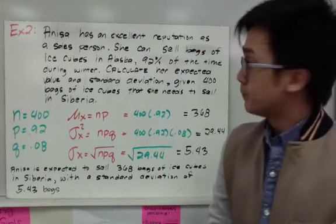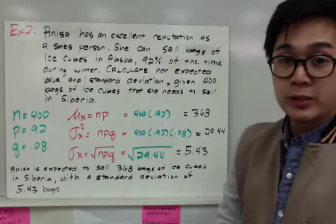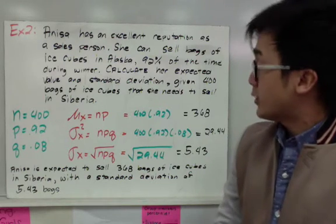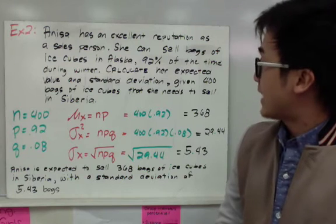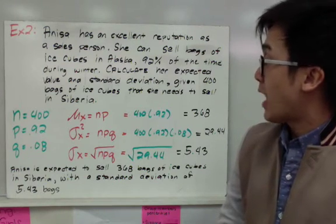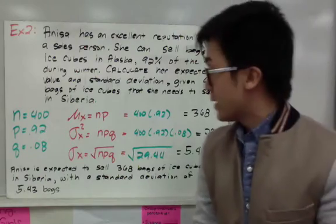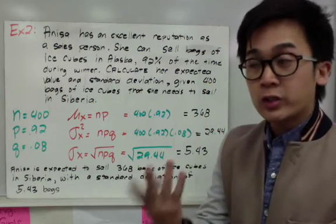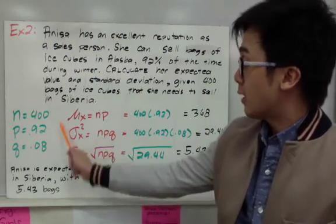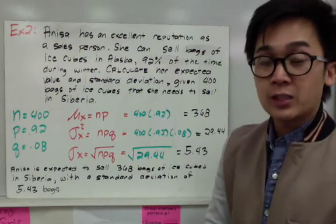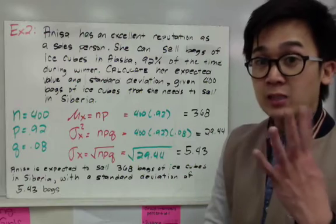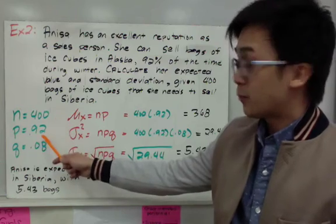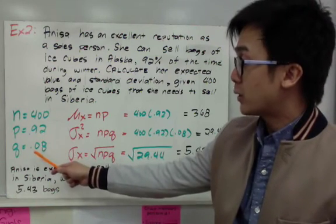Now for the second example, Anissa has an excellent reputation as a salesperson and she can sell bags of ice cubes in Alaska 92% of the time during winter. Let's try to calculate her expected value and standard deviation given 400 bags of ice cubes that she needs to sell in Siberia. You need to make sure that the problem satisfies the four conditions of a binomial experiment, and in this case it satisfies all four. So n is 400, p is 0.92, and q is equal to 0.08.